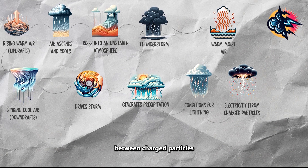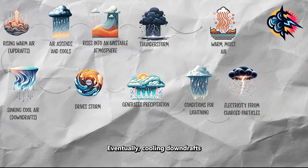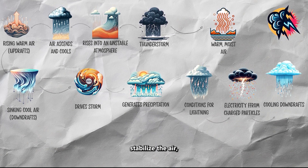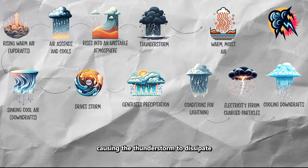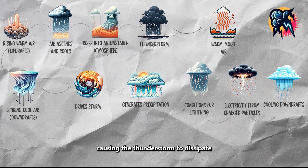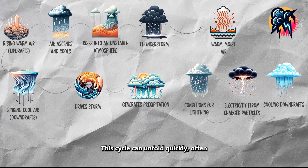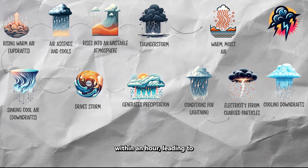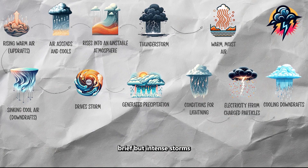Eventually, cooling downdrafts stabilize the air, causing the thunderstorm to dissipate. This cycle can unfold quickly, often within an hour, leading to brief but intense storms.